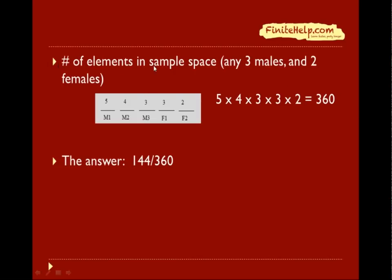Then we move on to the number of elements in the sample space for the denominator, which is any 3 males and any 2 females. That's 5, 4, 3 for the 3 males, and 3, 2 for the 2 females. We multiply across and it comes out as 360. Therefore, the answer is 144 over 360.